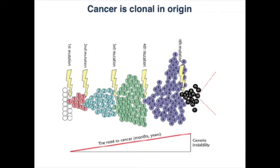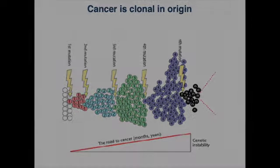Evidently, some factors seem to intervene to dramatically increase cancer incidence in some populations. The obvious interference is that contributory factors that cause cancer are either hereditary or environmental — meaning that either certain populations carry a large number of cancer susceptibility genes, or that the environment in which populations live largely contributes to the cancer incidence rates.